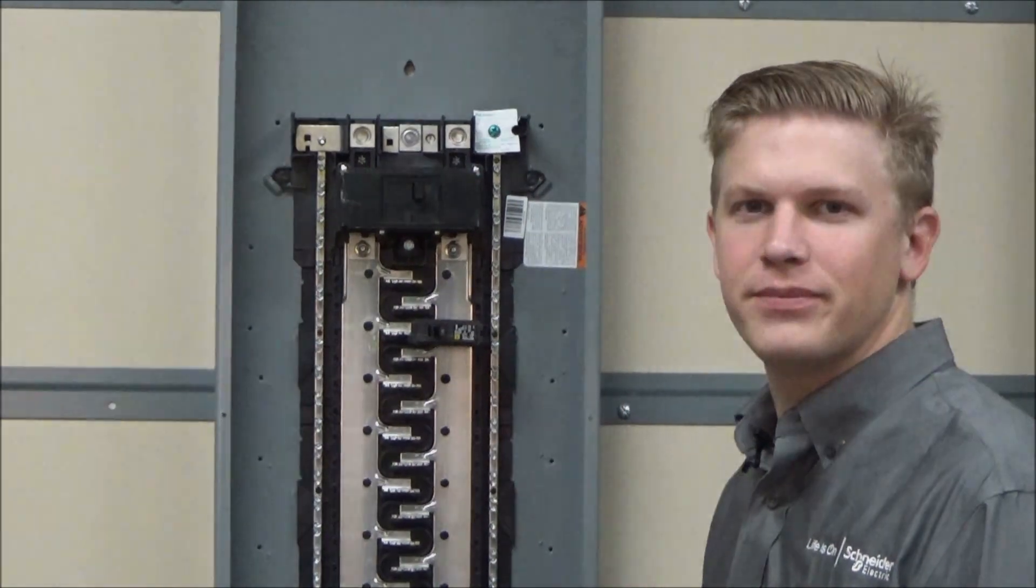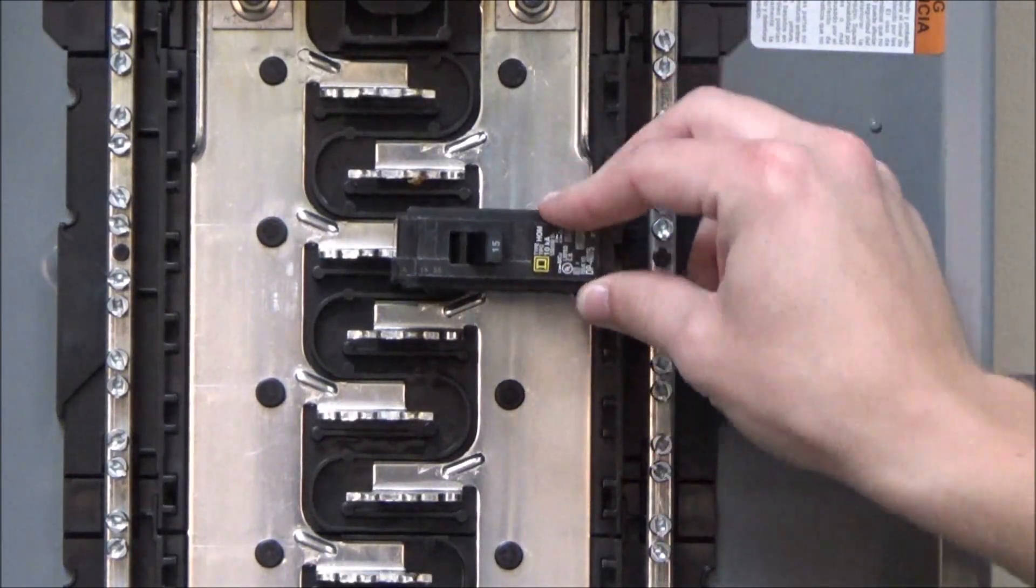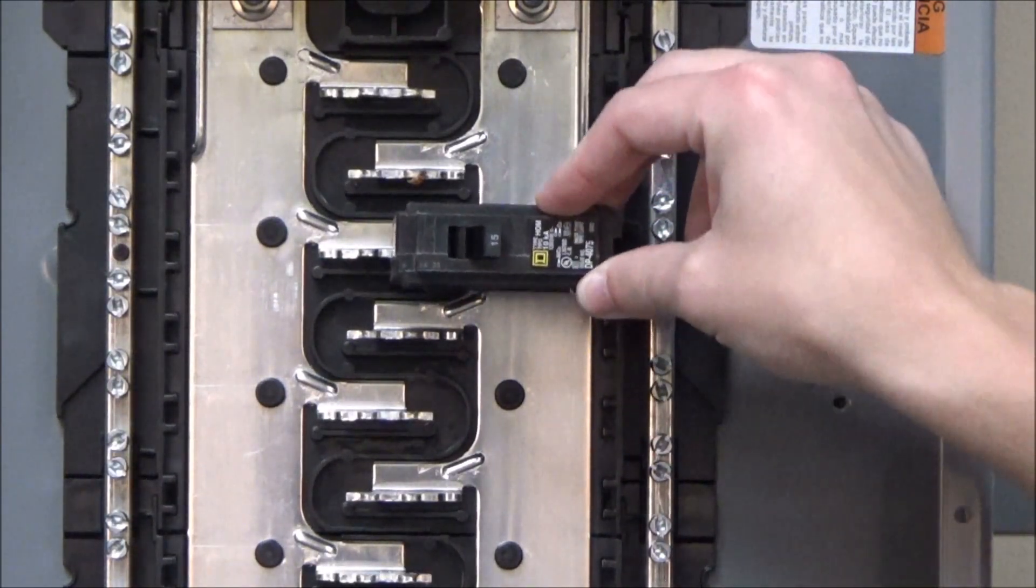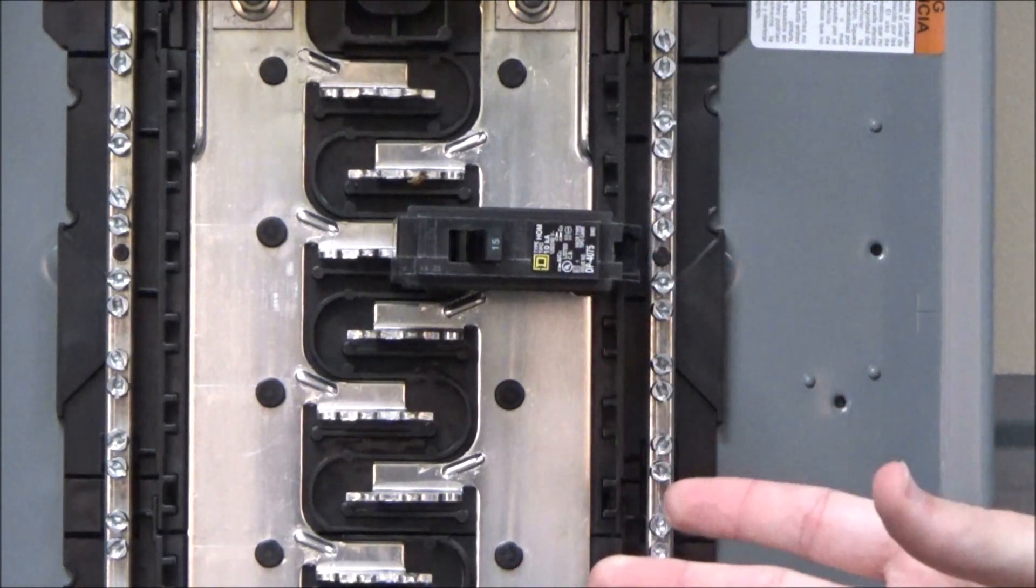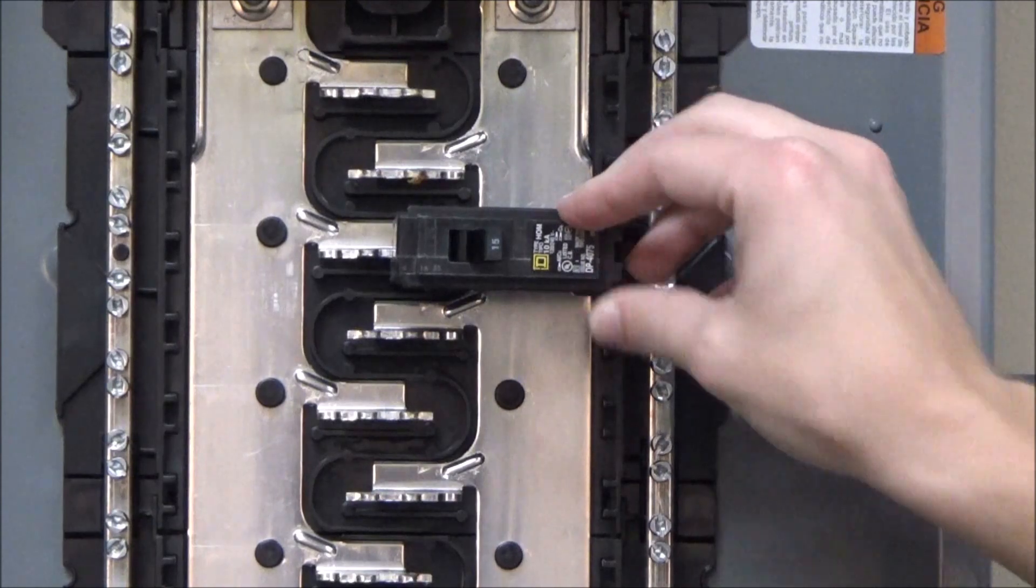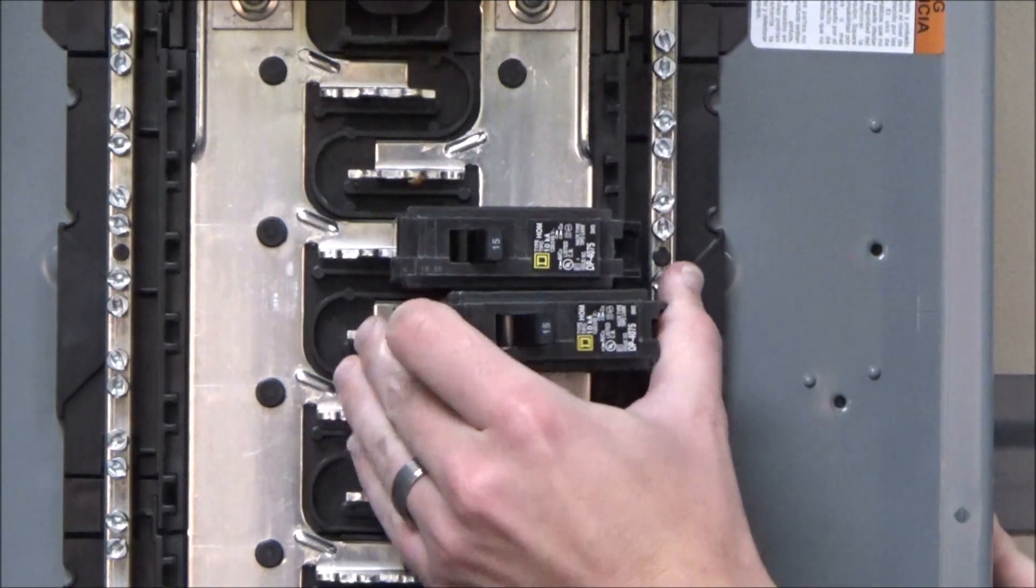You will see that without the cover on, the breaker does have some up and down movement to it. Some breakers might have more movement than others. This is normal. You'll also see as you install more branch breakers into the panel.